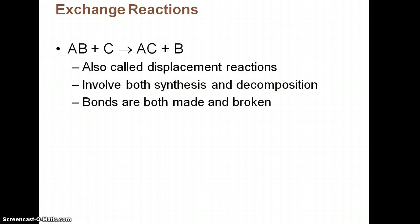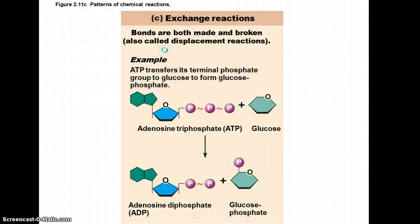In an exchange reaction, we're going to have both bonds being made and bonds breaking, so we have both synthesis occurring and decomposition. Another term for them is a displacement reaction — the same things are just getting moved around a little bit. An example: we have ATP (adenosine triphosphate) and glucose. We can form ADP (adenosine diphosphate) by breaking off that last phosphate bond and adding it onto glucose, so now we have glucose phosphate. We have a bond breaking and a bond being made.